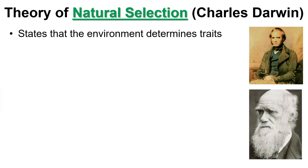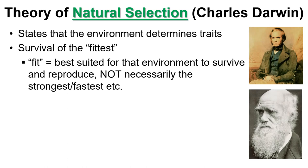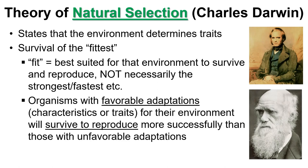Nature determines who can survive there and therefore who will reproduce and pass on their traits. He says environments determine traits. Whoever's most fit — which really means suited, not strong or healthy or big, it means suited — whoever's most suited for the environment will survive. That's called survival of the fittest. And he said that if you have traits or what we call adaptations, a characteristic that helps you survive, you're more likely to reproduce and make more organisms with that same trait. So we're going to see favorable traits increase in a population.